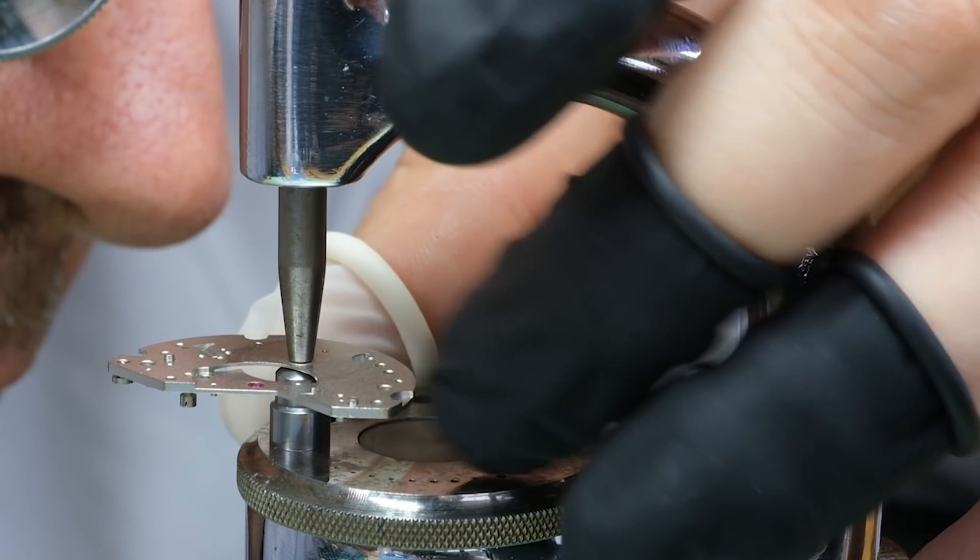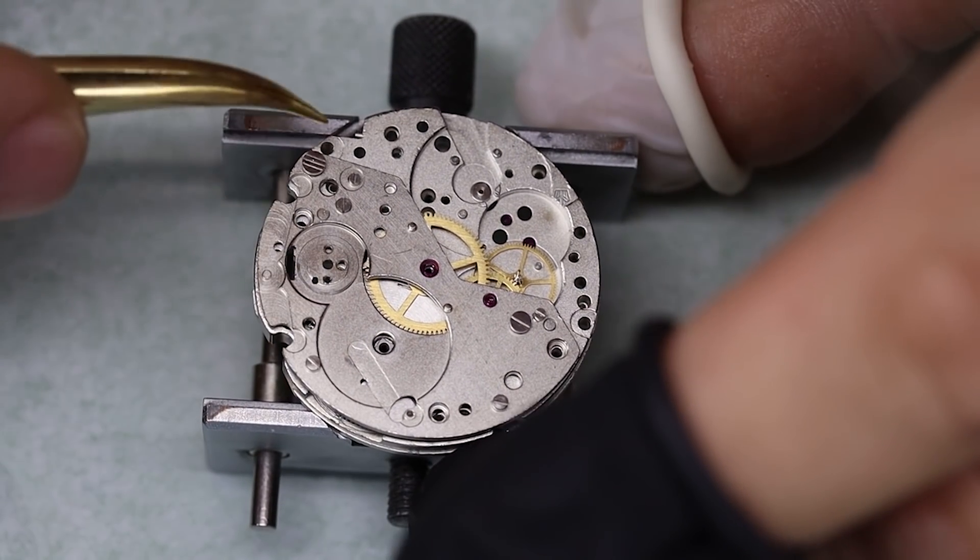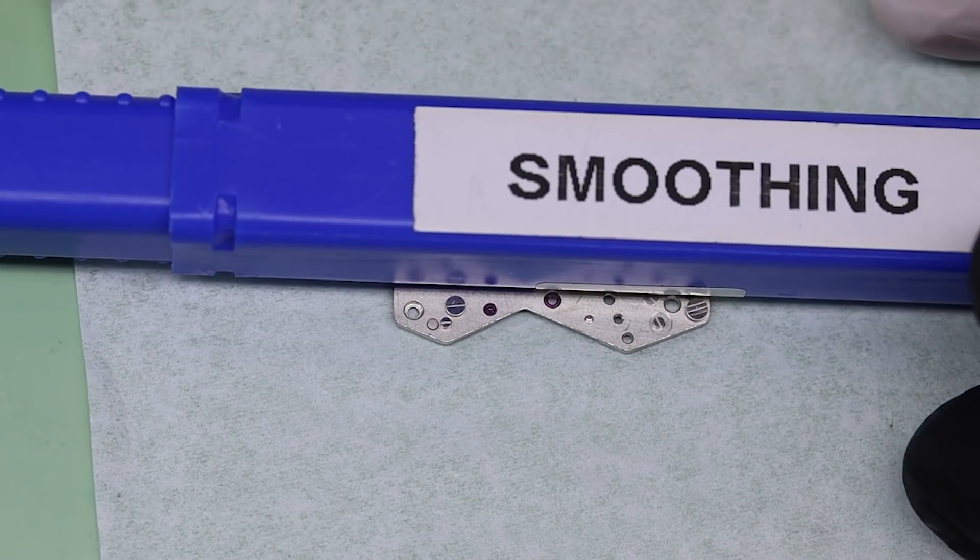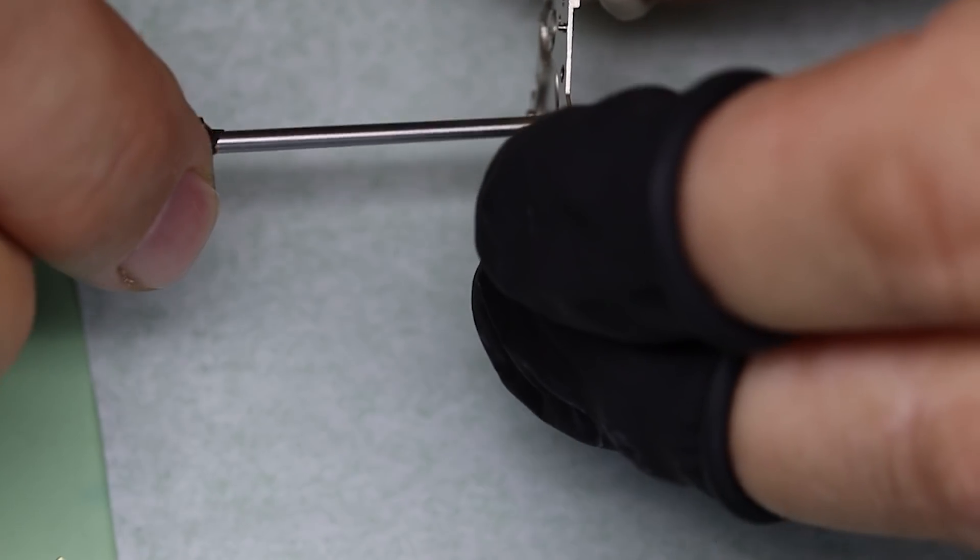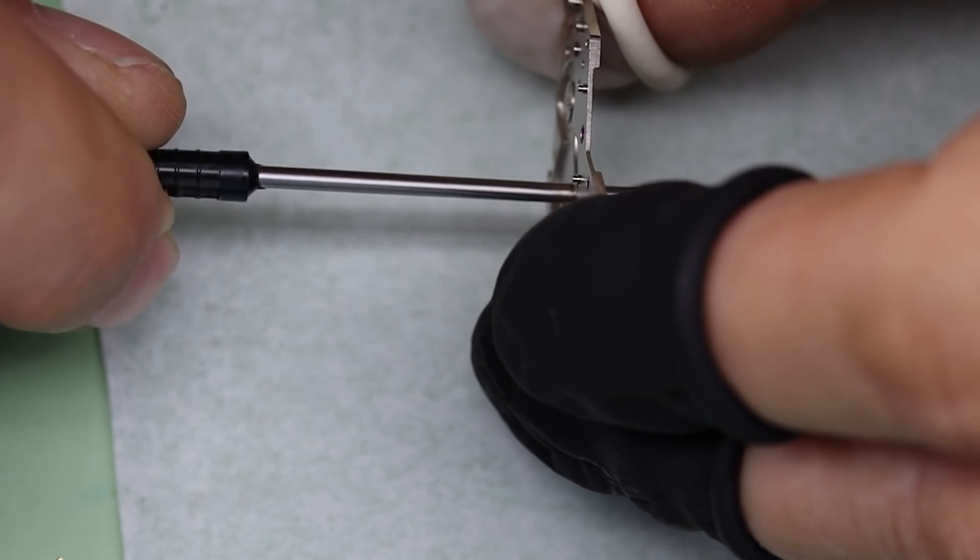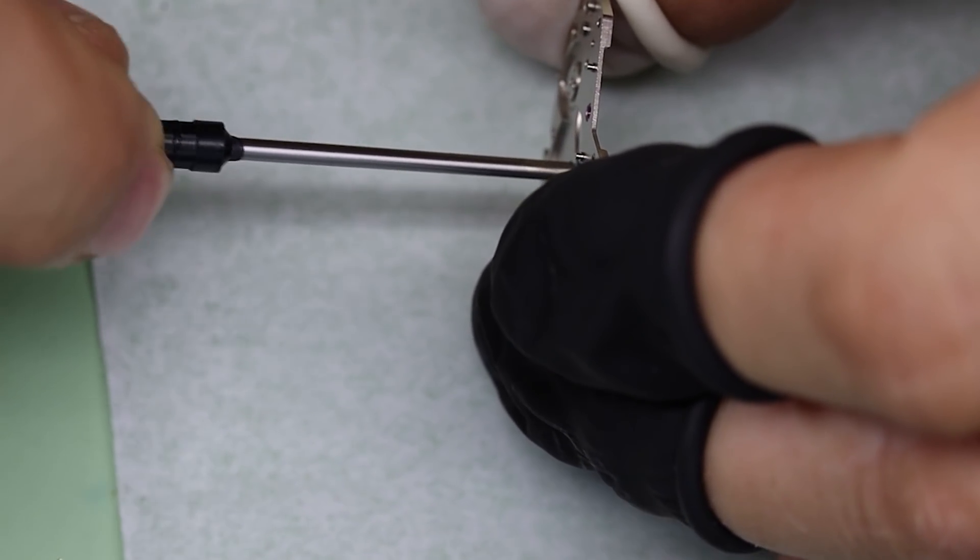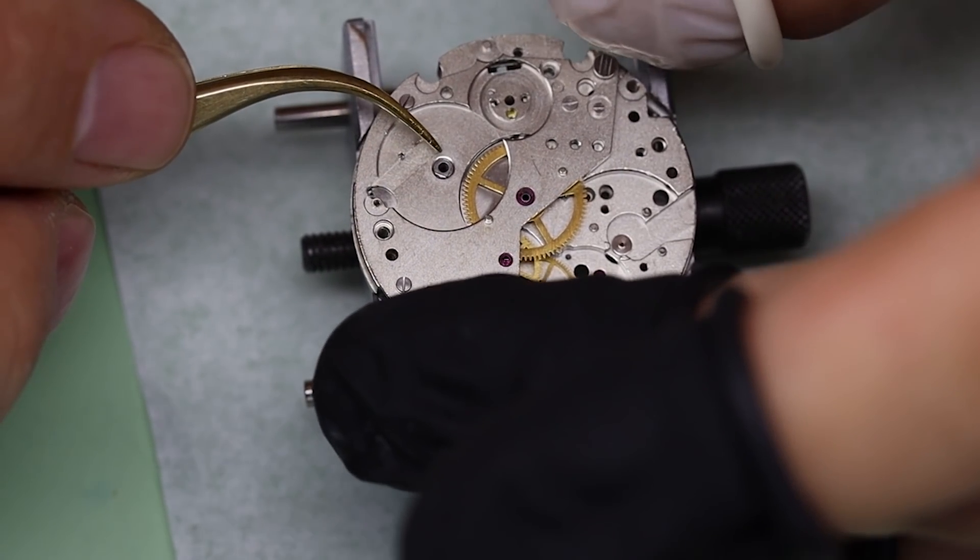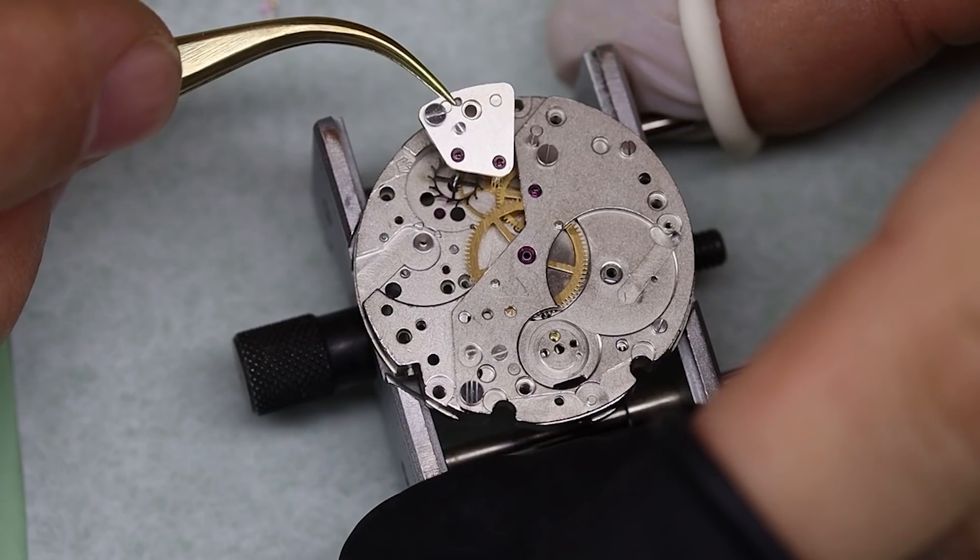Then we're going to see if the bridge fits, and we actually don't want it to fit. It should be a little bit too small because we're going to use the smoothing broach to basically compress the hole to be just big enough. What we want to achieve is that there is just enough play for the barrel arbor to turn inside the hole, but no more than that. And that looks good.